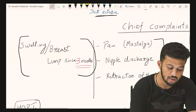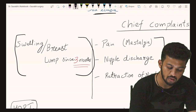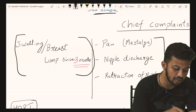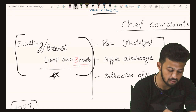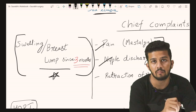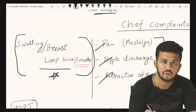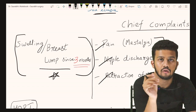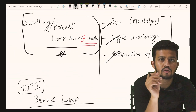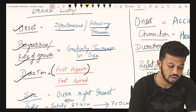The patient presents with the chief complaint of a swelling or breast lump since three months. Other complaints may include pain, nipple discharge, or retraction. Our main concern will be about the swelling or the breast lump.